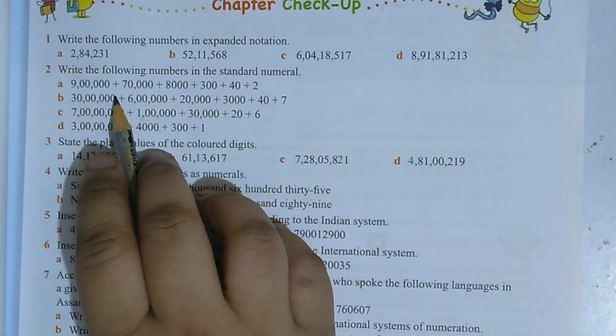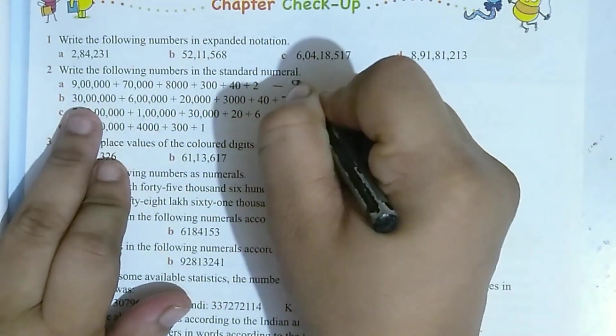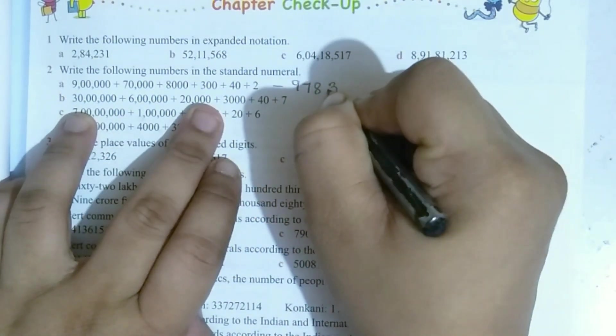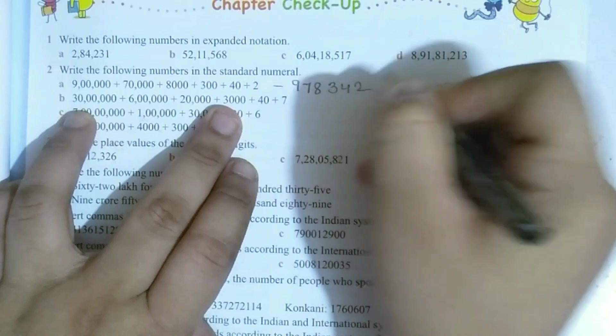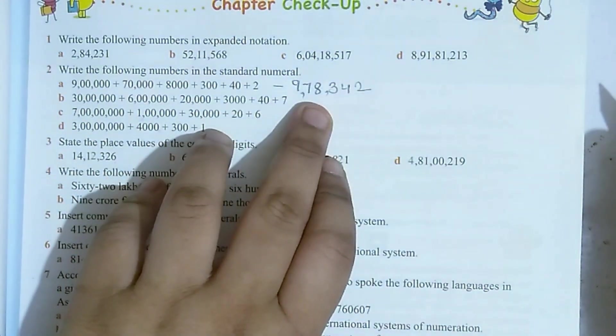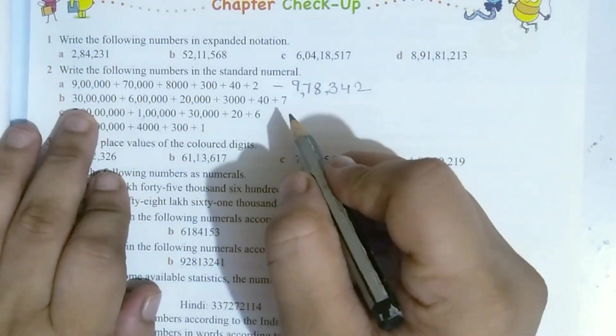So this number is 9, 7, 8, 3, 4, 2, means this number is 9,78,342.